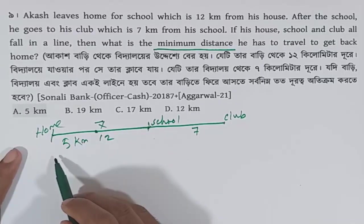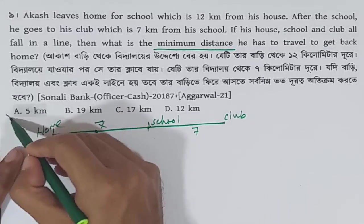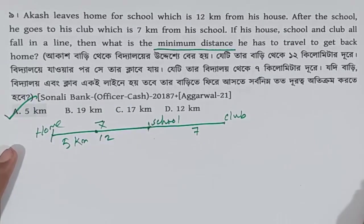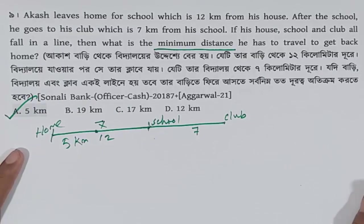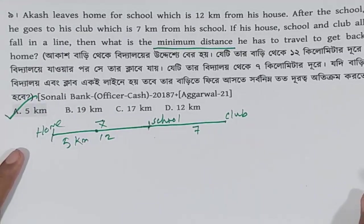The minimum distance back home is 5 km, and that matches the correct option. Option A is correct.